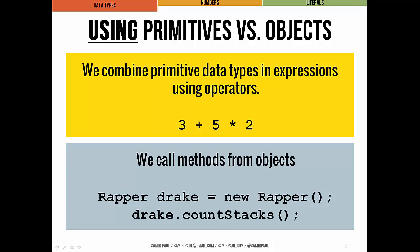Here's the key difference in how we use them. Primitive data types we combine using operators — plus, times, modulus, divided by, and so on. But objects first have to be instantiated, as you can see in this line here — I'm instantiating a new wrapper object called drake. And finally, the way we use that wrapper object is by calling one of its methods, count stacks.